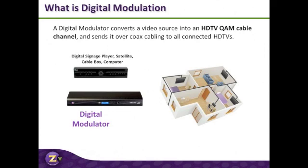So the world went digital about 10 years ago, and the first modulators to come out on the scene were extremely expensive. Blondertongue, Sencor, and others introduced modulators that were upwards of $20,000 to $25,000 per channel. They certainly found favor in corporate broadcasts or in sports arenas, but you weren't going to take them to Harry's Bar or to the doctor's office and suggest a digital signage or video distribution system at $20,000 a channel.